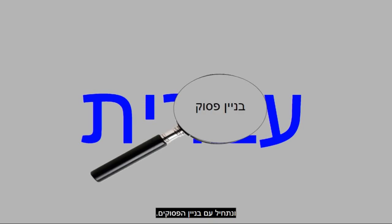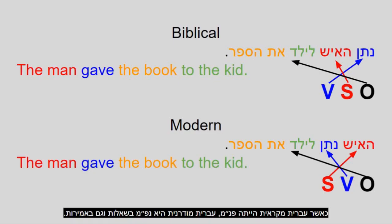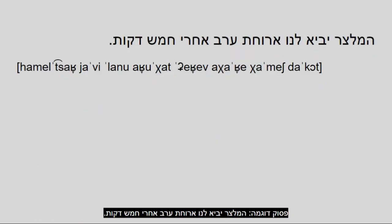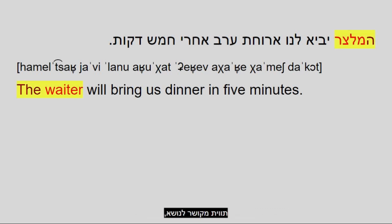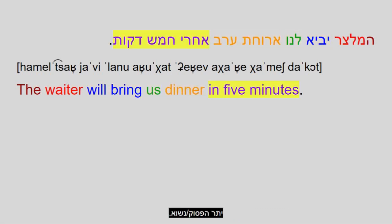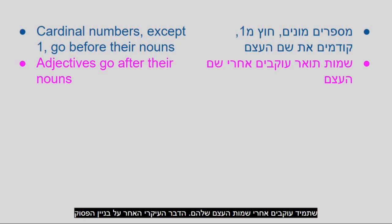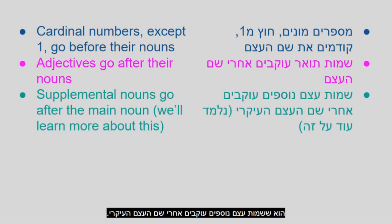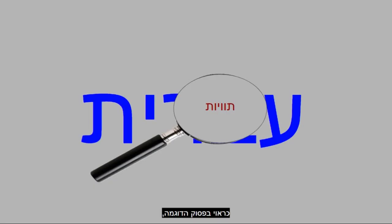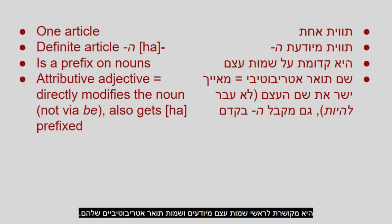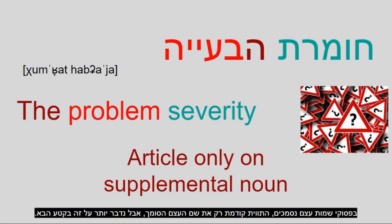Now for some Hebrew grammar, starting with sentence structure. While Biblical Hebrew was VSO, modern Hebrew is SVO in both question and statement form. Typically, the object order is indirect object, then direct object, then any other descriptors. Hebrew has one article: the definite article 'ha,' attached to the beginnings of definite nouns and their attributive adjectives. In constructive noun phrases, the article only goes on the absolutive noun. Hebrew is pro-drop for subject pronouns, except in the present tense. Numbers go before the noun they modify, except for one ('echad'/'achat'), which goes after. Adjectives always go after their nouns, and supplemental nouns go after the main noun.